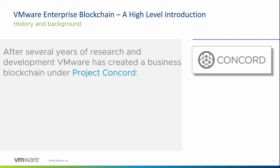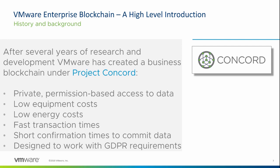One of the things that VMware has been working on for a couple of years now is a business-class blockchain under a project called Project Concord, and this tackles some of those problems head on. One of the things in Project Concord is that it's a private, permission-based blockchain. So only people who are allowed or members of the consortium can see any of that data, and the data itself is permission-based as well, with various levels of access control.